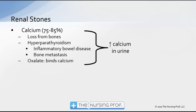When we're talking about renal stones, it's important to know where these come from, because there's not a lot you can do once a patient has a stone. We want to help them pass the stone through and control their pain, but there's not a lot we can do at that moment to just magically make it go away. If we can help them prevent recurrent stones, because oftentimes patients who've had stones in the past will have stones again.